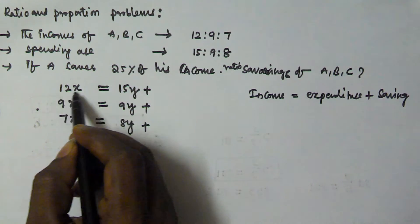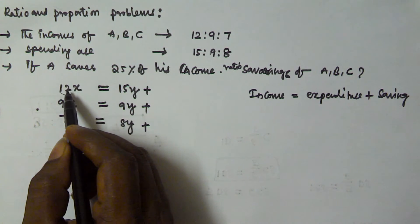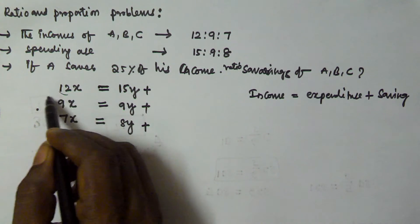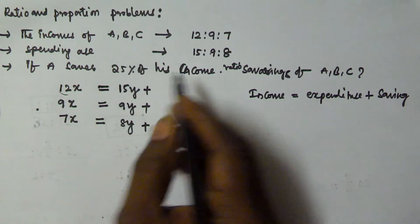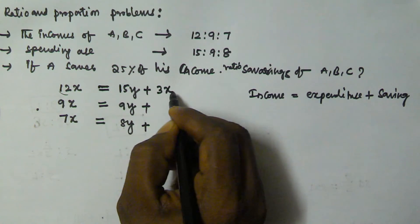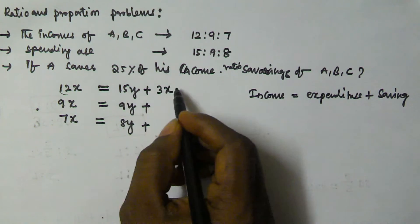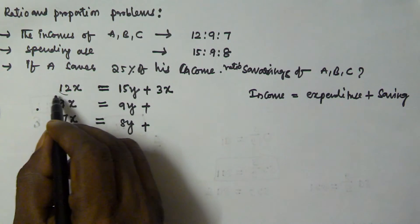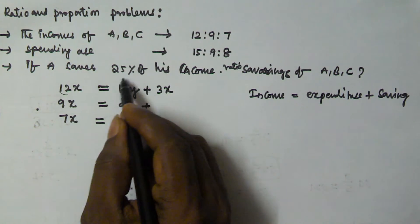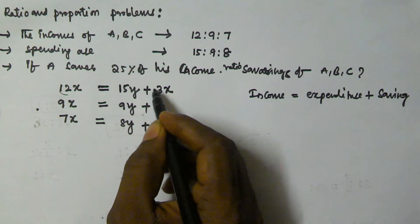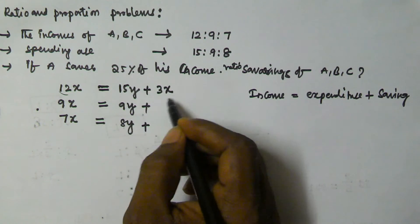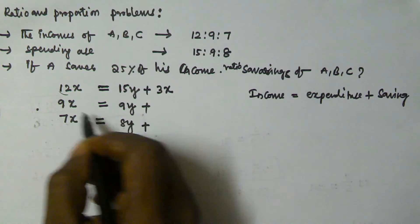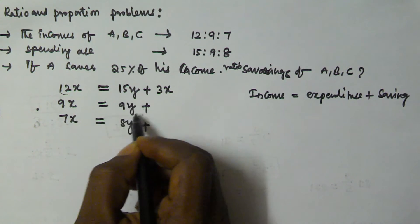A saves 25% of his income. His income is 12x, and 25% of that is one-fourth of 12x, which equals 3x. So the saving of A is 3x.